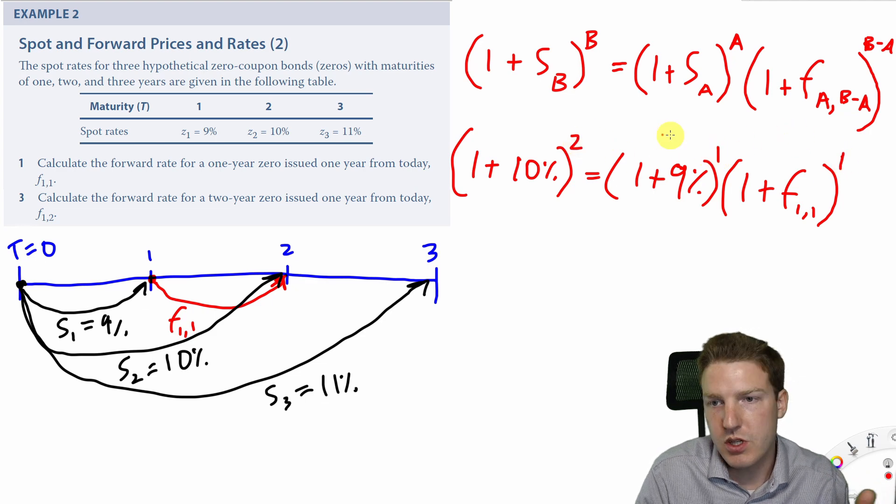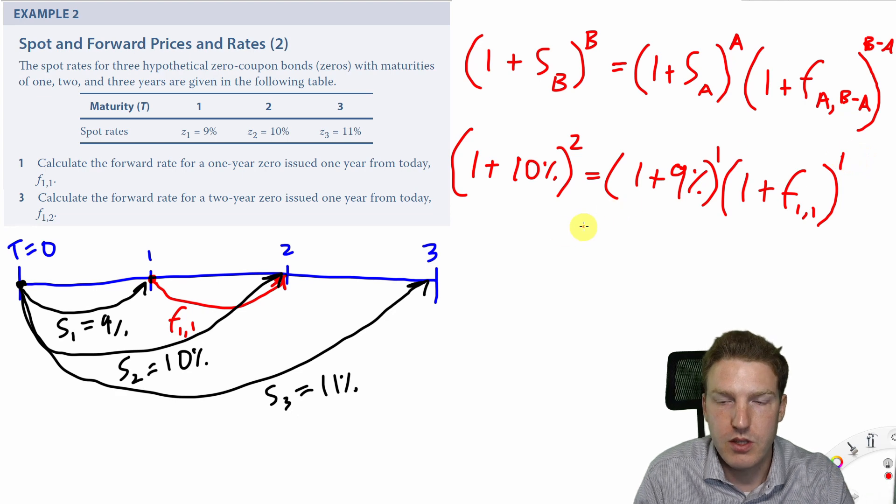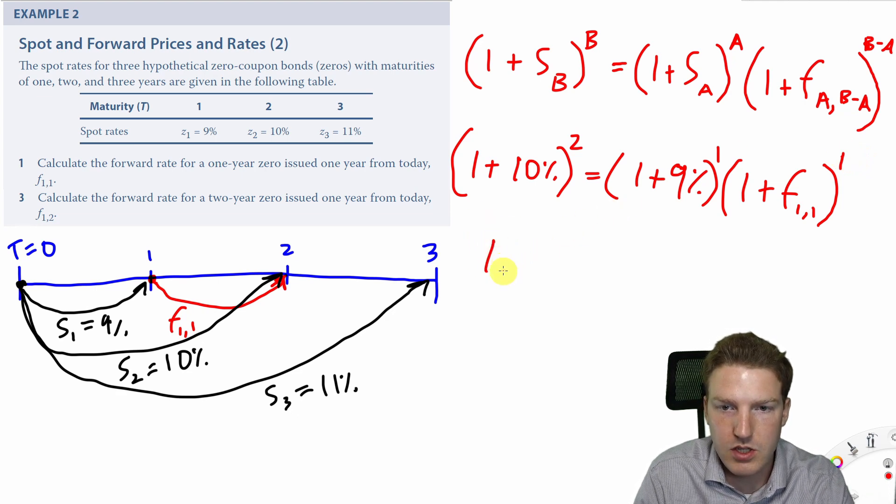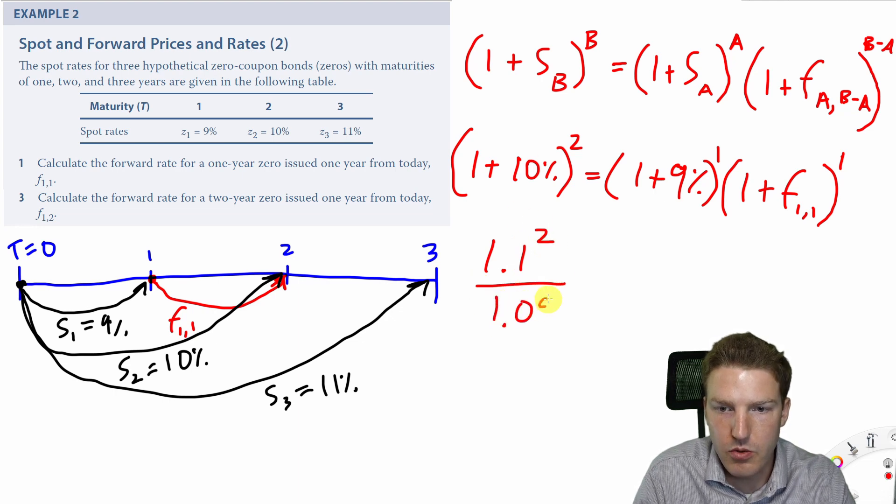Okay, so 2 is equal to 1 plus 1, so we know that we've got it correct. So then we can solve for this by doing 1.1 squared divided by 1.09 minus 1 here is equal to the forward rate we're trying to solve for.